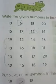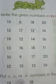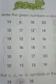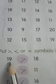Next, comparison of numbers. As we have learned, the open mouth should come towards the bigger number. From numbers 19 and 18, 19 is the bigger one, so put the open mouth towards 19.